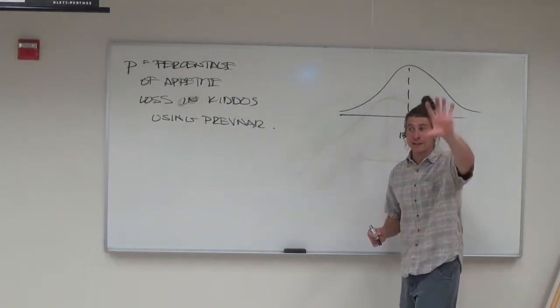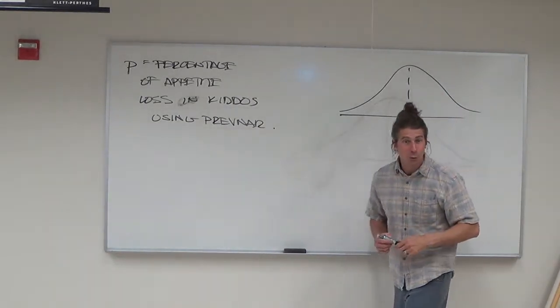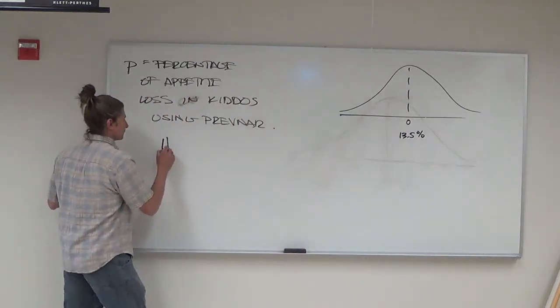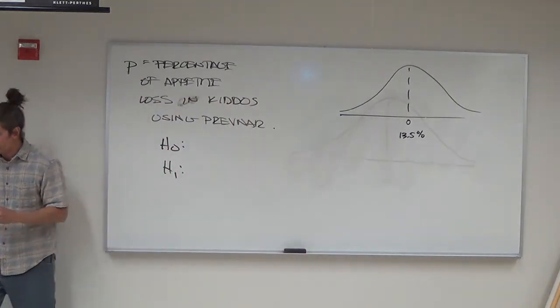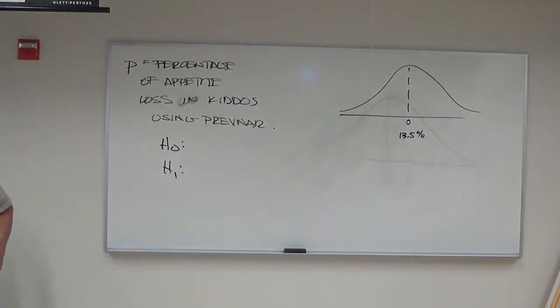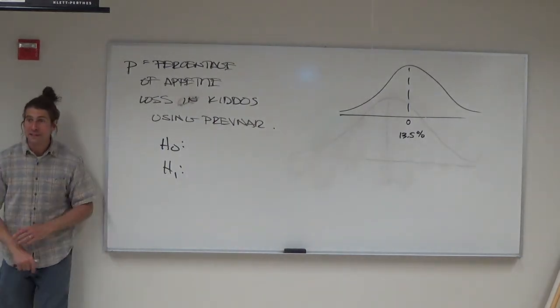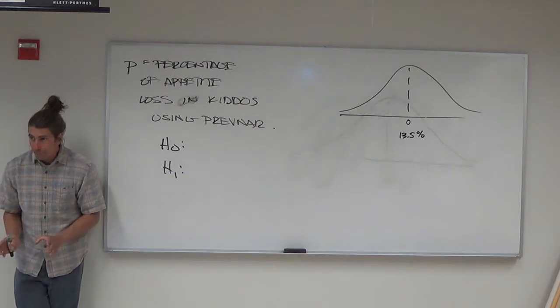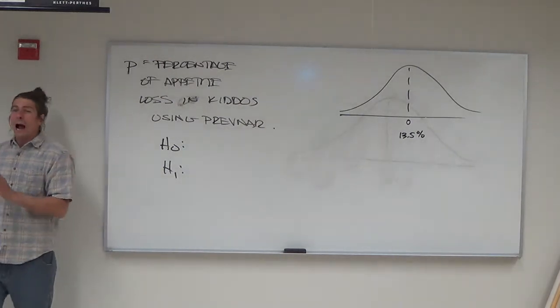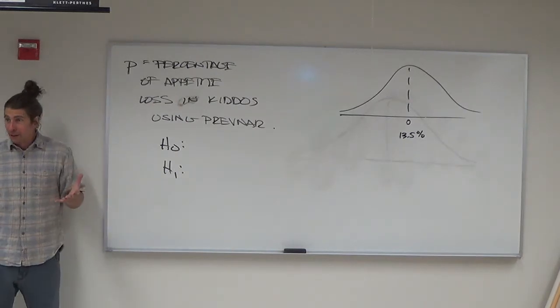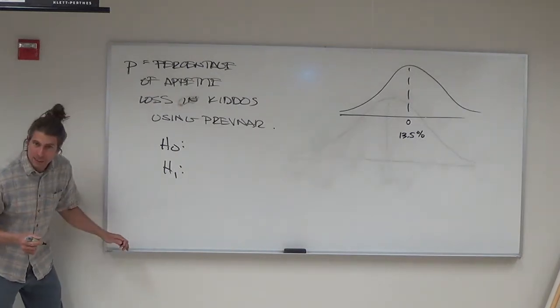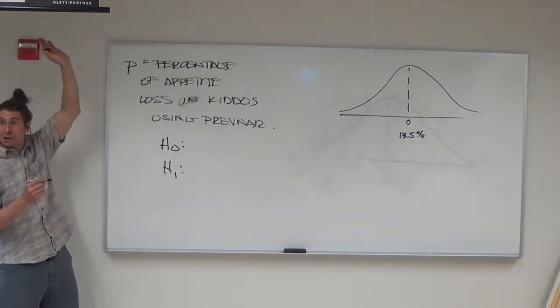A student mentions 13.5% is the null hypothesis. The instructor thanks Jolene and moves to step three: writing out the hypotheses. They prefer to start with the research hypothesis and ask students what it will be in symbols, requesting hands raised.